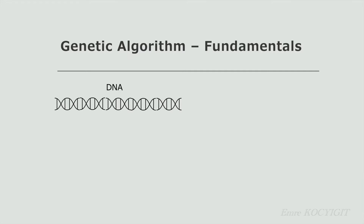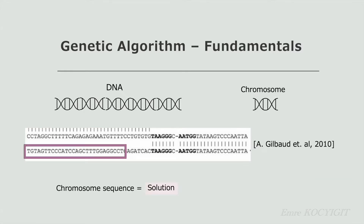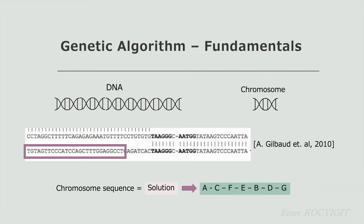In genetic algorithm, each solution — each individual — is represented in a chromosome form. Remember DNA and DNA packages, in other words, chromosomes. Each chromosome is a sequence, and the letters in it represent elements like nucleotides (adenine, guanine, thymine, cytosine). But of course those nucleotides are not important for us. What matters is that in genetic algorithm we use a chromosome sequence structure to represent our solutions. We can use different letters or numbers. Think of each letter as an abbreviation of a city name and you want to make a route — this route can be represented like a chromosome. From now on, when I say chromosome, it is the same as solution.